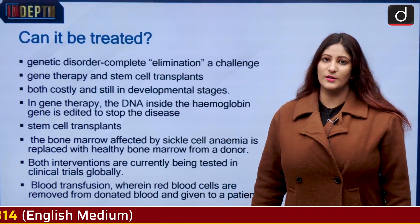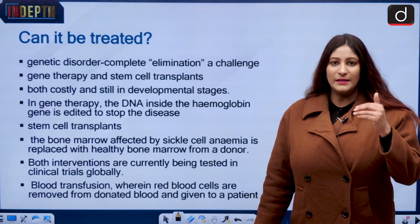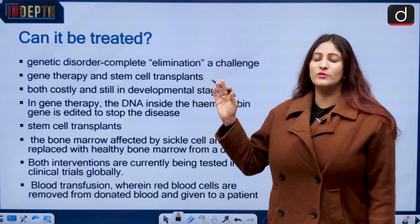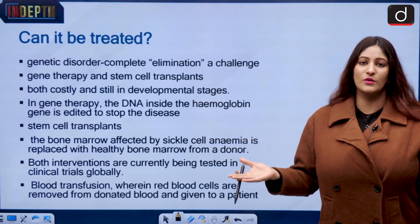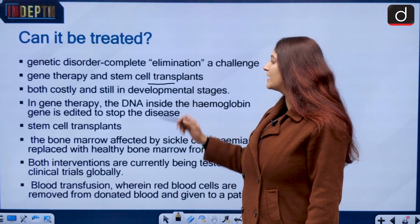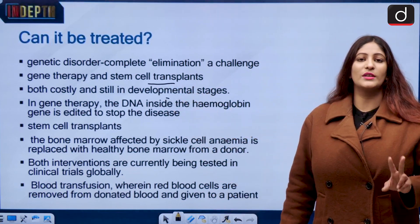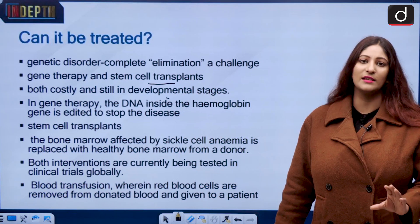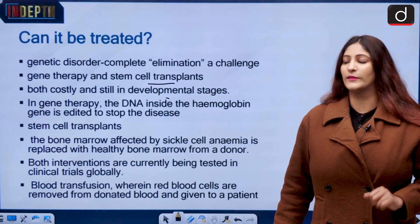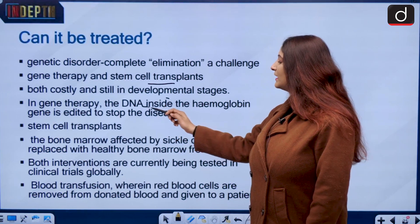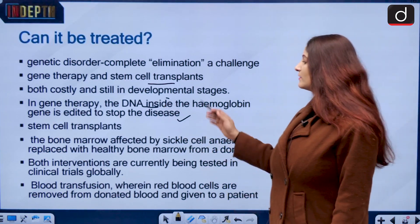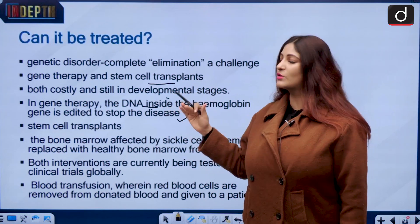This is a genetic disorder, so completely eliminating it is a big challenge. Two cures we can mention are gene therapy and stem cell transplant, both currently in a nascent development stage and very costly. In gene therapy, the DNA inside the hemoglobin gene is edited, and it is expected that this will stop the disease.